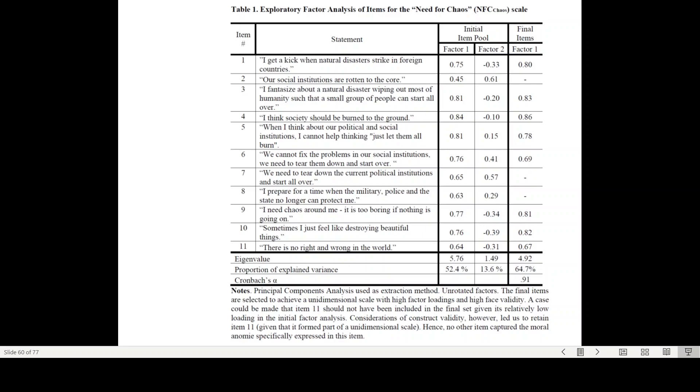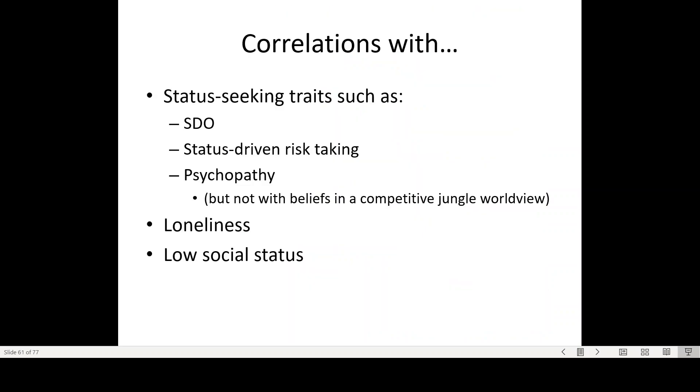This kind of typical aggression item: sometimes I just feel like destroying beautiful things, combined with this idea that there's moral relativism, so there's no right or wrong in the world, I can do whatever I want. So this is a Need for Chaos. It's an individual difference variable that is relatively stable. And now they demonstrated in a number of studies recently that this need for chaos is correlated quite highly, quite consistently with status-seeking traits such as social dominance orientation, status-driven risk-taking, so people willing to take risk in order to increase their social status, also concepts like psychopathy that you probably have heard about already in other courses. But interestingly, it's not strongly correlated with a competitive jungle worldview.